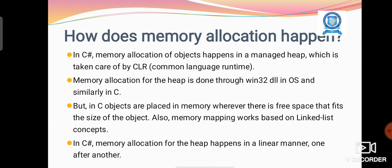Memory allocation for the heap is done through win32 DLL in the OS, and similarly in C. C objects are placed in memory wherever there is free space that fits the size of the object. Memory mapping in C works based on the linked list concept. In C#, memory allocation for the heap happens in a linear manner, one after another.